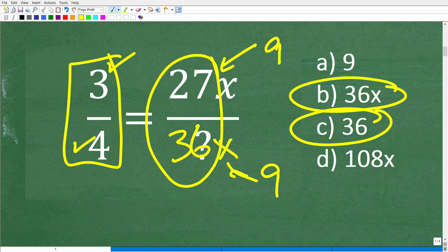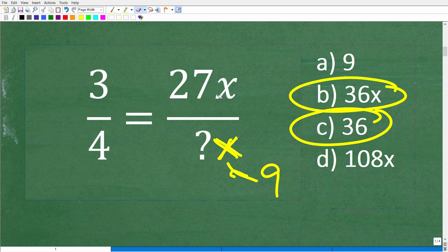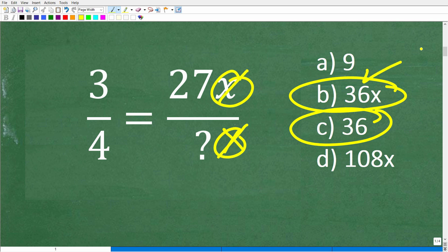So, these two numbers right here, 36x and 36, we have to have a 36 in the denominator. Now, why do we need an x down here? Because over on this fraction, there is no x in the numerator or the denominator, so we have to get rid of the x. So, how can we get rid of an x? Well, if you divide an x by an x, anything divided by itself is 1. So, these factors can cross-cancel. That's why the correct answer is 36x.